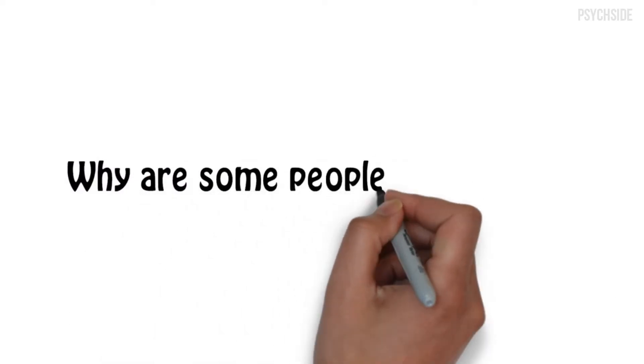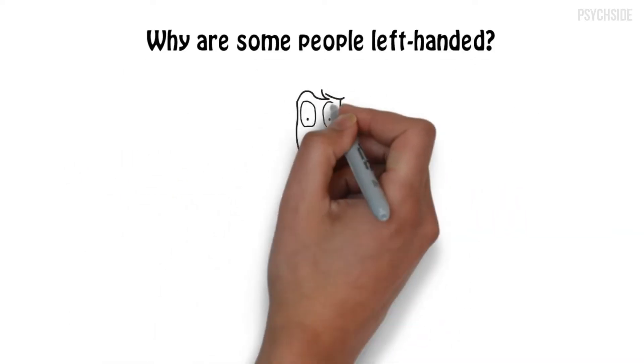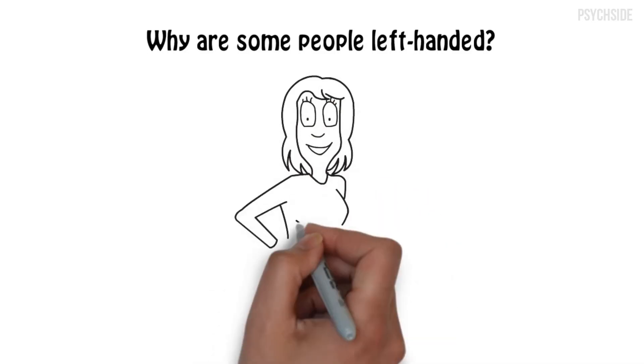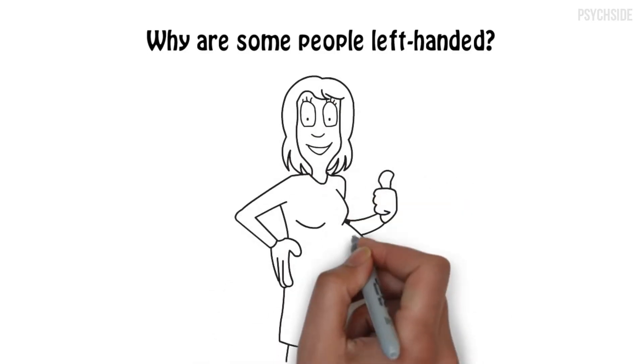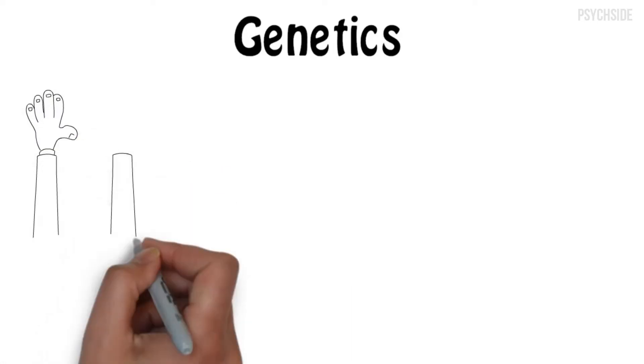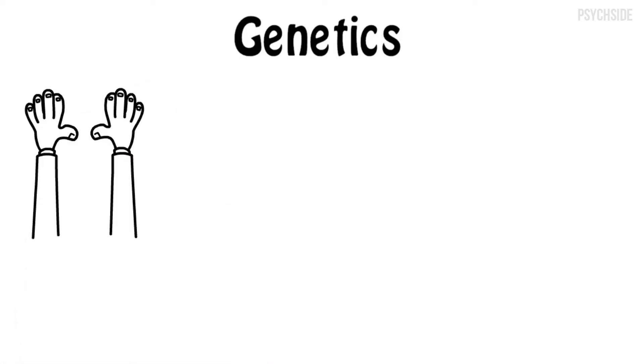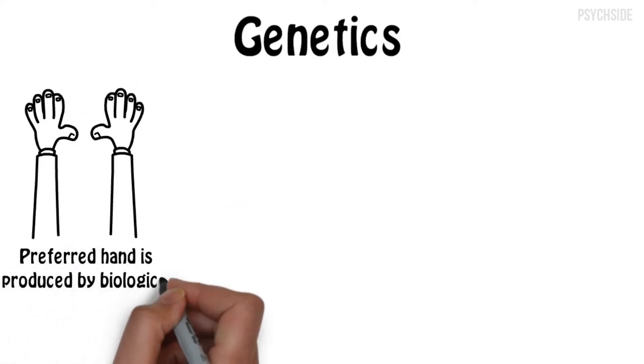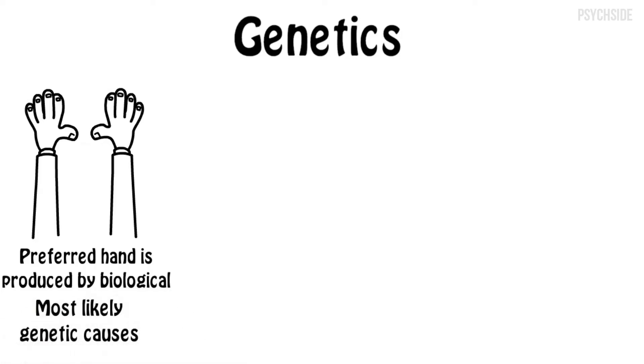But why are some people left-handed? Some theories suggest that our preference for being left or right-handed can be predicted even before birth based on the fetus's position in the womb. Researchers who study human hand preference agree that the side of the preferred hand is produced by biological and, most likely, genetic causes.